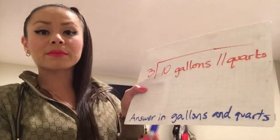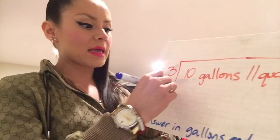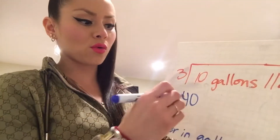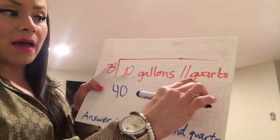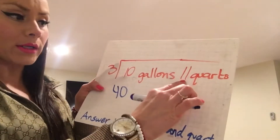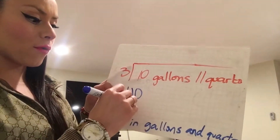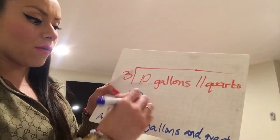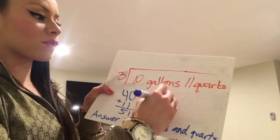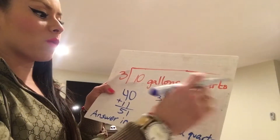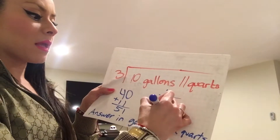So 10 times four — because there are four quarts in one gallon — is 40 total quarts. Since we already have 11 more quarts, we just add it to our 40 and we have a total of 51 quarts. Now we can divide 3 divided by 51.